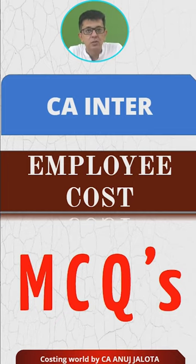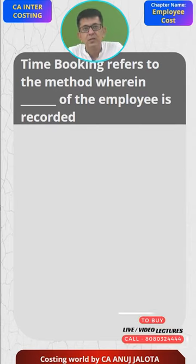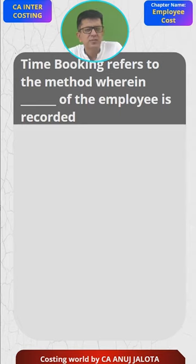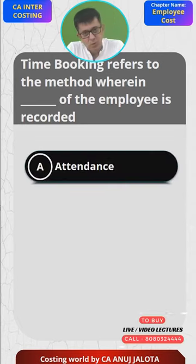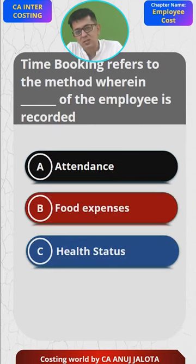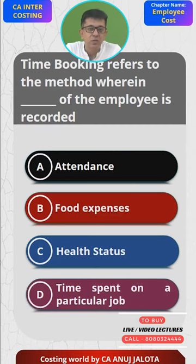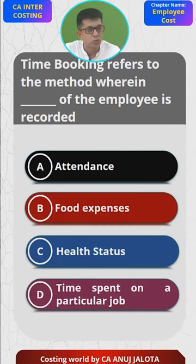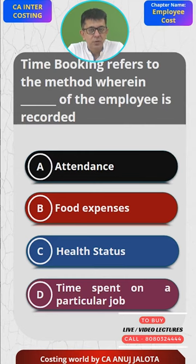Today's question: 'Time booking refers to a method where dash of the employees is recorded.' The options are: A) Attendance, B) Food expenses, C) Health status, D) Time spent on a particular job. This 'time booking' word we have all seen many times in our questions. Please pause the video and comment your answer in the section below.